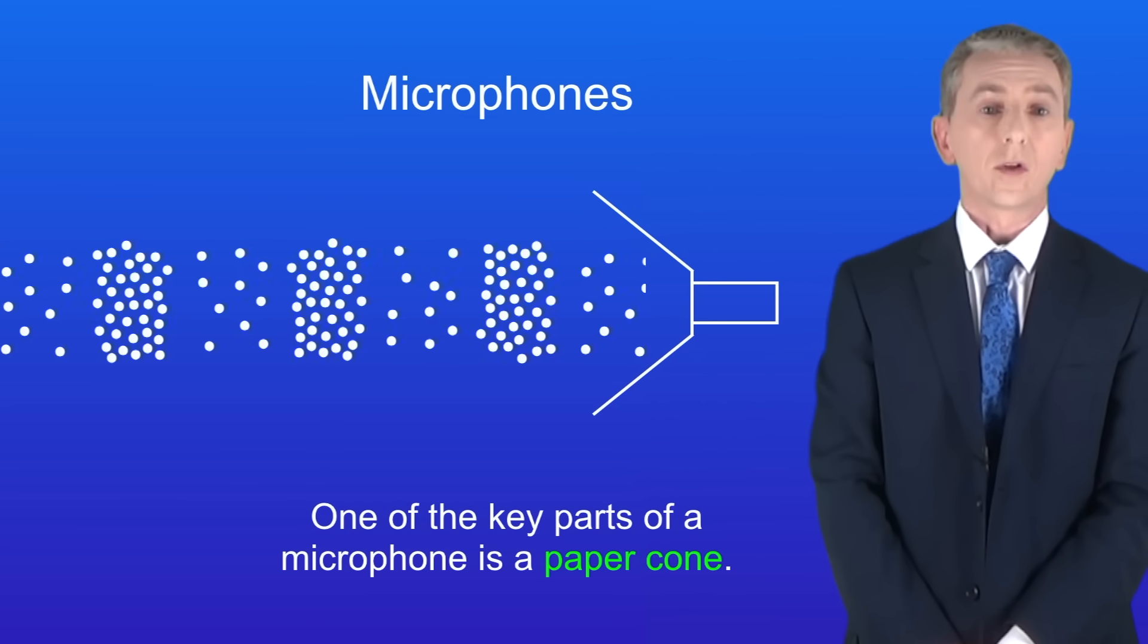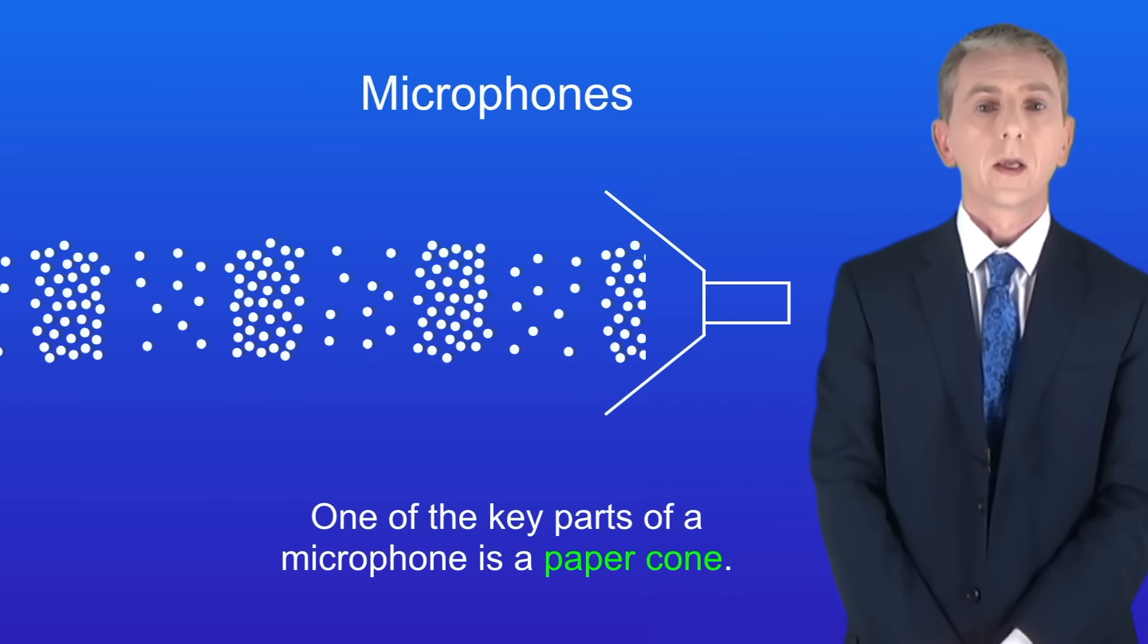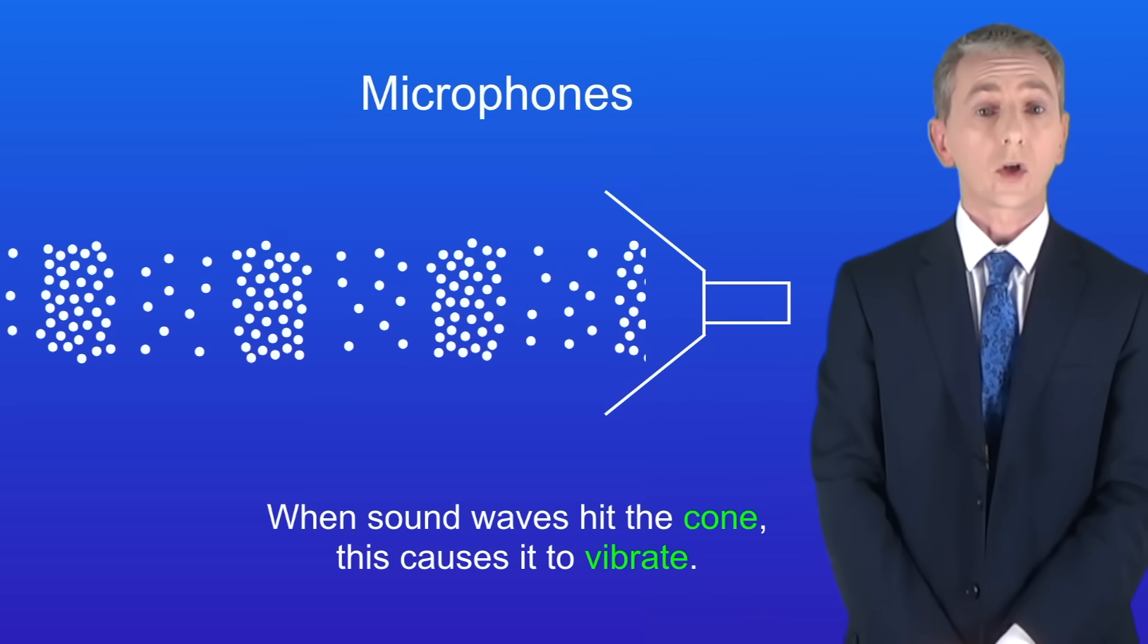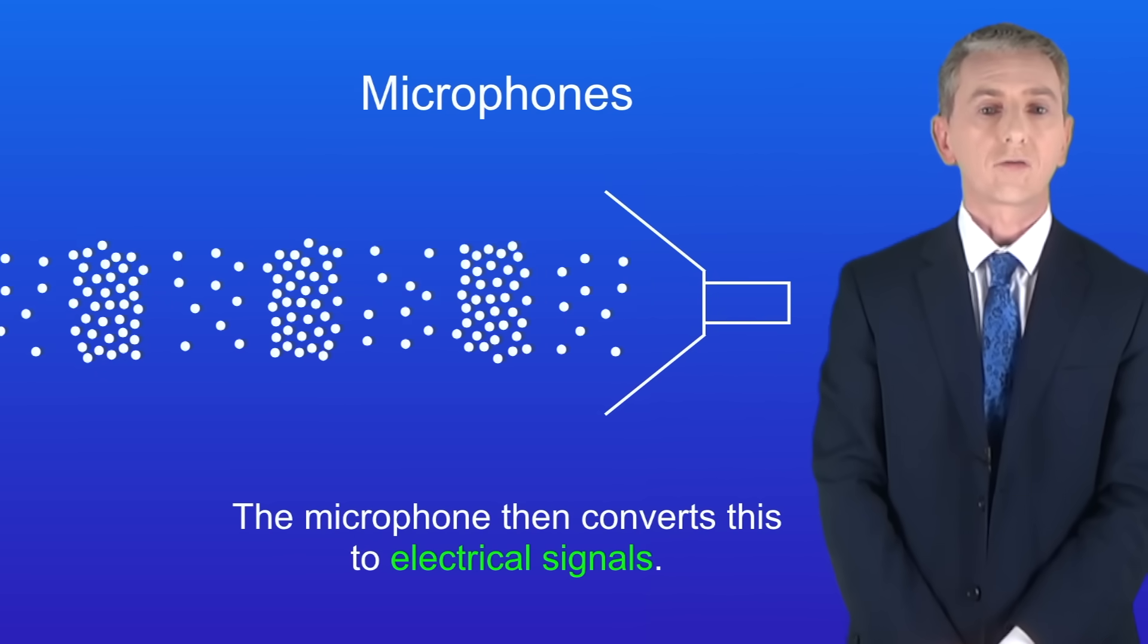We'll be looking at microphones in more detail in a later video, but one of the key parts of a microphone is a paper cone. When sound waves hit the cone this causes it to vibrate. The microphone then converts this to electrical signals.